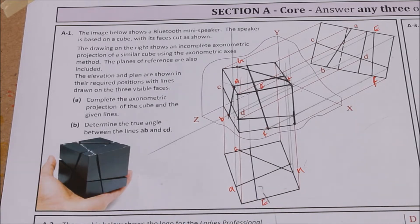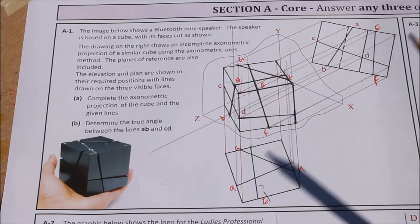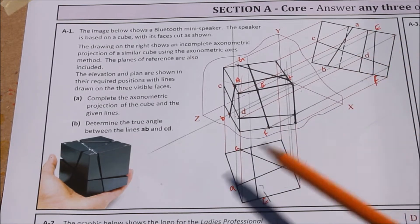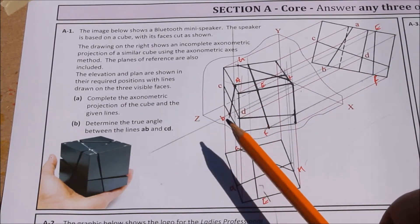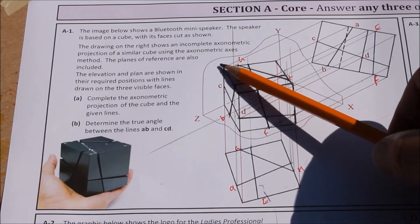That's our complete axonometric projection of the cube and the given lines. Now, for part B, so B says determine the true angle between the lines AB and CD. Now, if you look at your lines AB and CD here, what we need to do, to find a true angle, you've got to see that surface of the cube as a true shape.